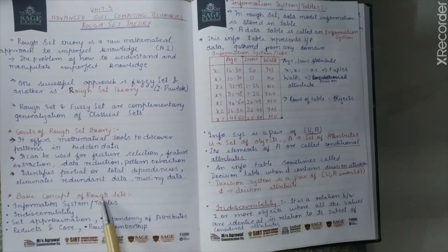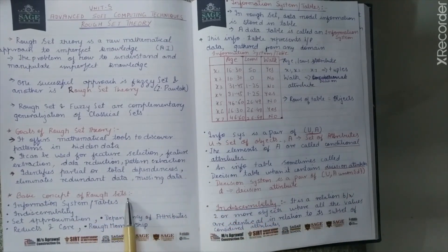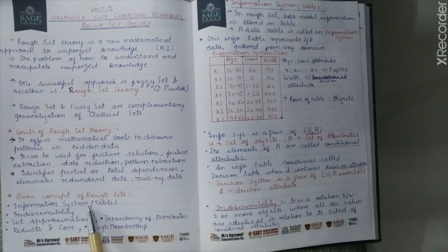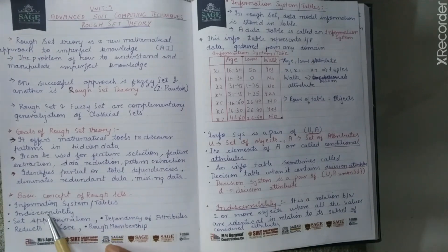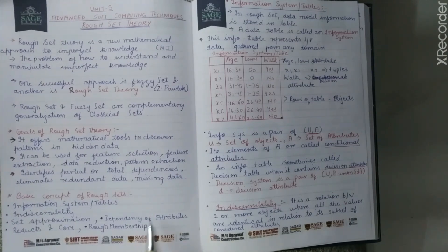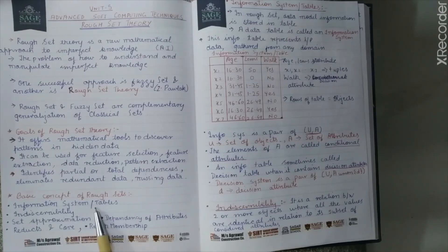Next, let's look at the basic concepts of rough sets. These include: first, information system; second, indiscernibility; third, set approximation; next, reduction and core; rough membership; and dependency of attributes. These are all the basic concepts of rough sets.